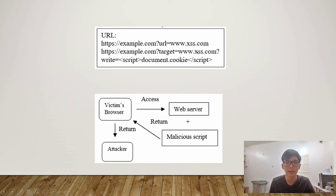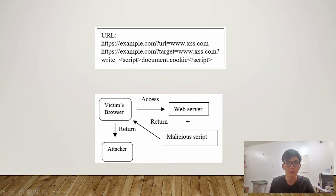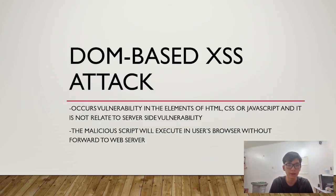Here are two examples of malicious URLs: the first one directs the user to www.xss.com, and the second one is used to get document.cookies from the current session of the user when they log into their web browser. In the scenario, the user's browser accesses the malicious URL, the web server returns the malicious script, the browser executes it, and the result is returned to the attacker.